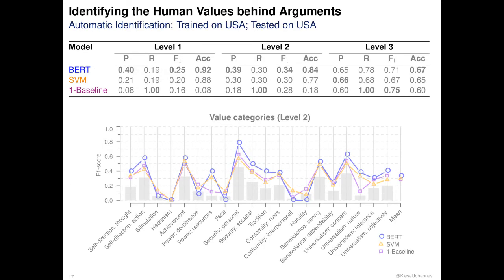As a first try at automatic identification, we tested three approaches in a cross-validation setup: standard BERT, a word-based SVM, and a baseline that classifies each argument as resorting to all values. Here we report metrics averaged over all values, focusing on our main metric, the F1 score. For our first experiment, we only used the USA part of the dataset.